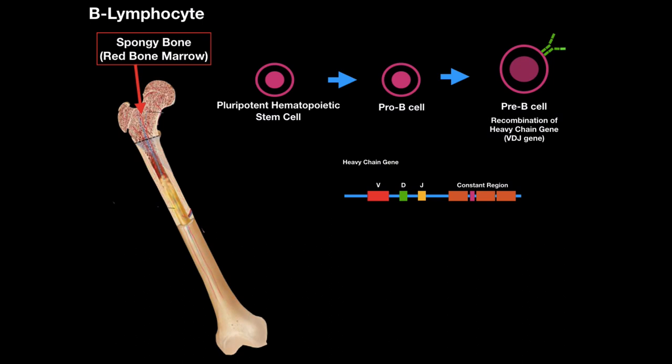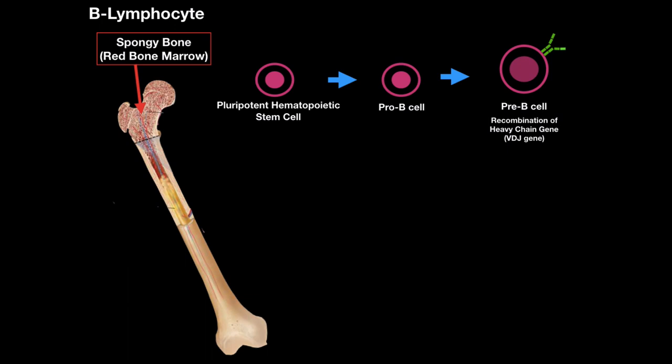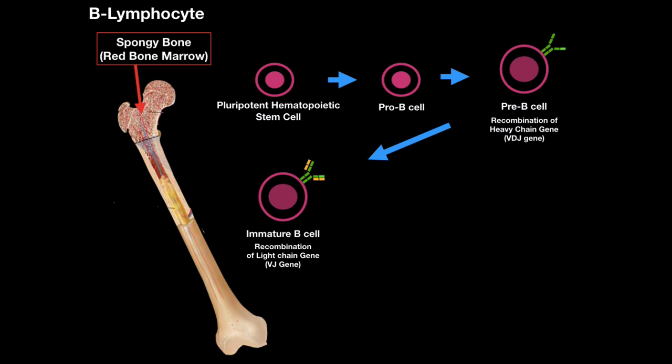The cell then becomes an immature B cell, the final stage before becoming a mature B cell, where recombination of the light chain gene occurs — producing kappa or lambda light chains, which combine with the heavy chains made in the pre-B cell stage to form membrane-bound IgM. An immature B cell only expresses membrane-bound IgM, but once mature, it expresses both IgM and IgD membrane-bound antibodies. All of this happens in the bone marrow — that's why it's called a B cell. T cells, however, are made in the bone marrow and travel to the thymus to continue development.